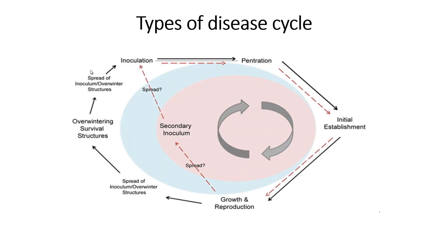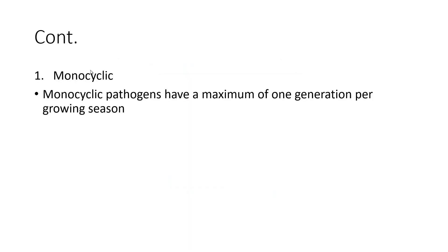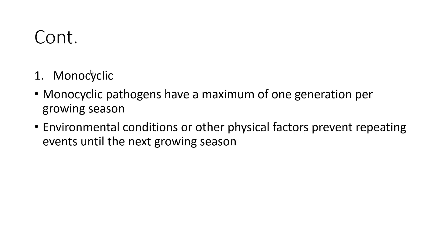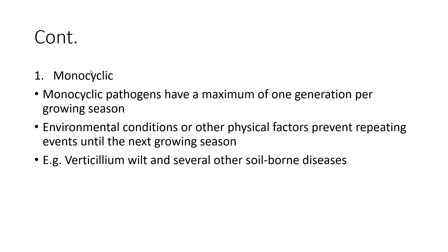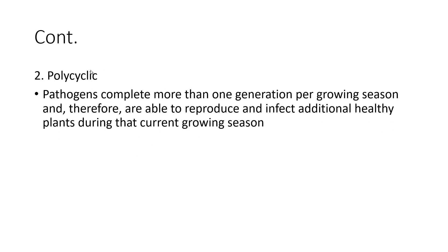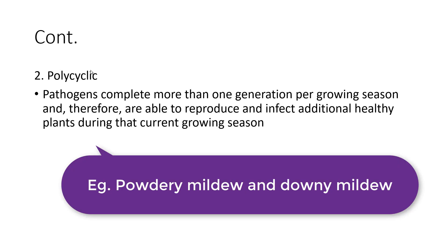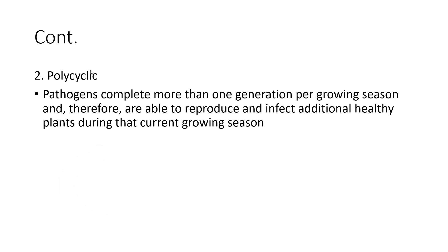Steps of disease cycle: generally, the disease cycle can be classified as monocyclic or polycyclic. Monocyclic pathogens have a maximum of one generation per growing season, as seen in the diagram. Environmental conditions or other physical factors prevent repeating events until the next growing season — for example, Verticillium wilt and several other soil-borne diseases. Polycyclic pathogens complete more than one generation per growing season, and therefore are able to reproduce and infect additional healthy plants during that current growing season.